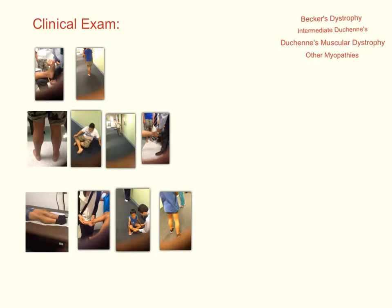Patient X and his family decided to see a specialist to diagnose his problem. After obtaining the previously mentioned history, the specialist performed a neurological exam and confirmed proximal weakness, the Gower sign, calf hypertrophy, and signs of hyperactivity, all of which are symptoms of X-linked muscular dystrophy such as Duchenne's and Becker's.